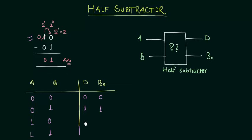Now 1 minus 0, no problem. The difference is 1 and the borrow is 0. 1 minus 1, both difference and borrow are 0. So how we are going to realize the difference D and BO. For that we need the logical expression. The gates and their combination.